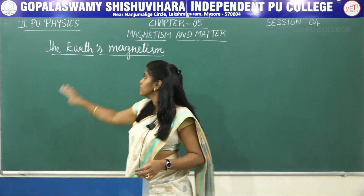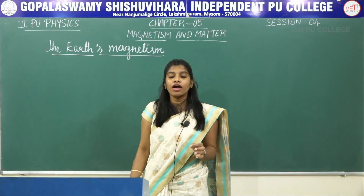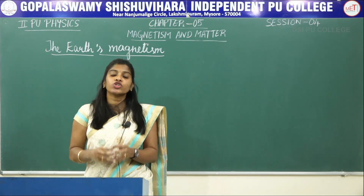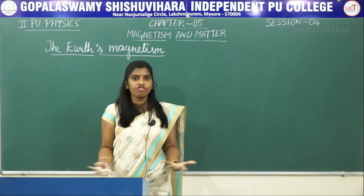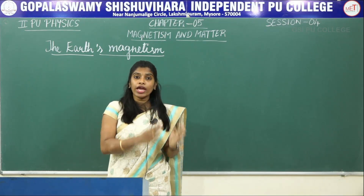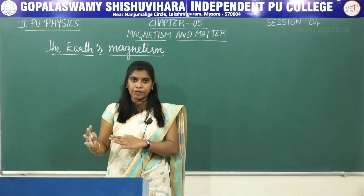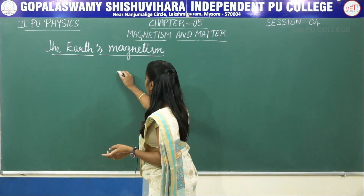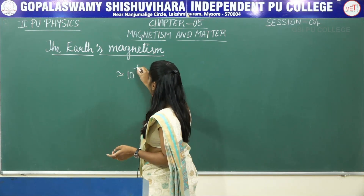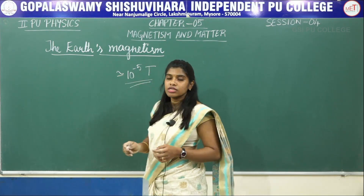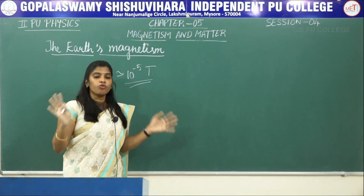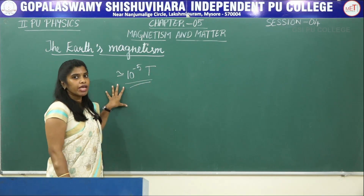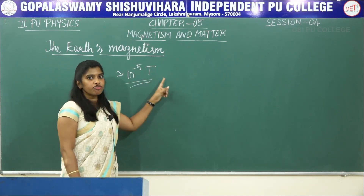The next topic is the earth's magnetism. In the first session, I mentioned that earth behaves as a magnet, so earth is going to produce magnetic field around it. This magnetic field varies from one place to another. The net magnetic field of the earth was found to be around 10⁻⁵ Tesla. Earth's magnetic field varies from place to place, but an approximate value is 10⁻⁵ Tesla.